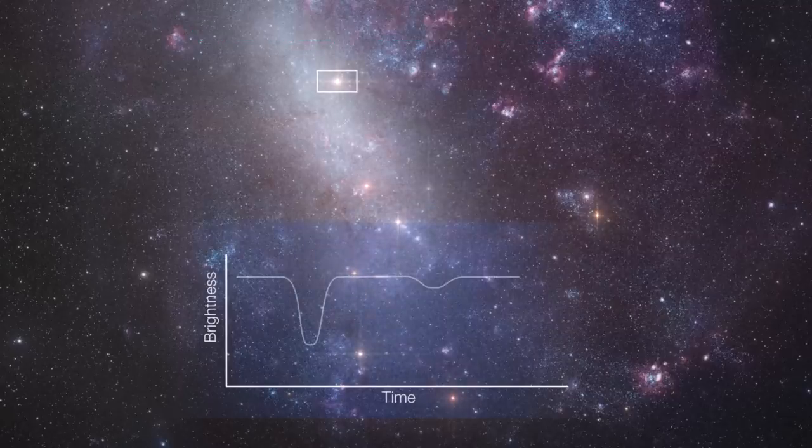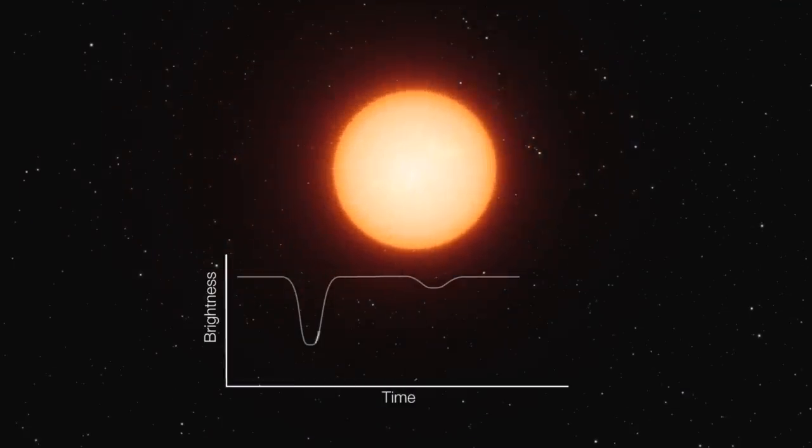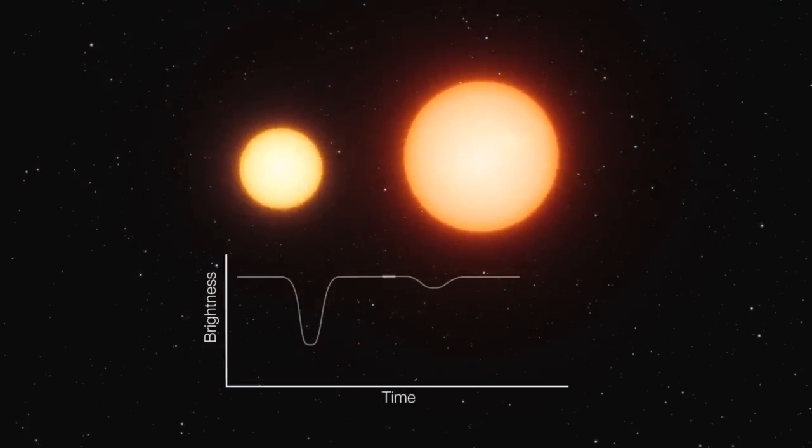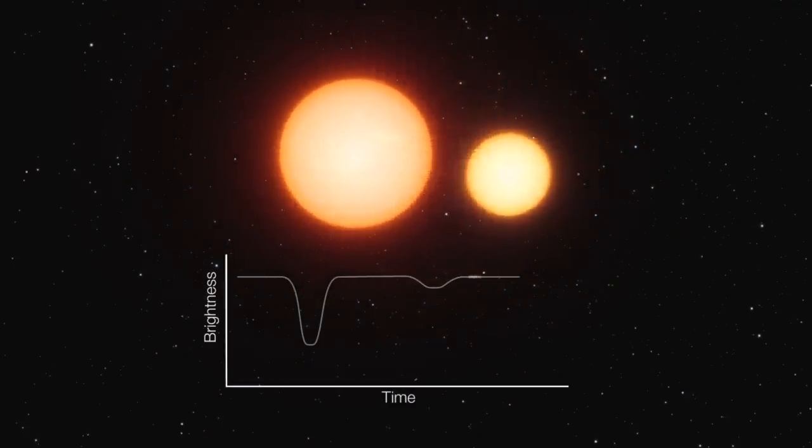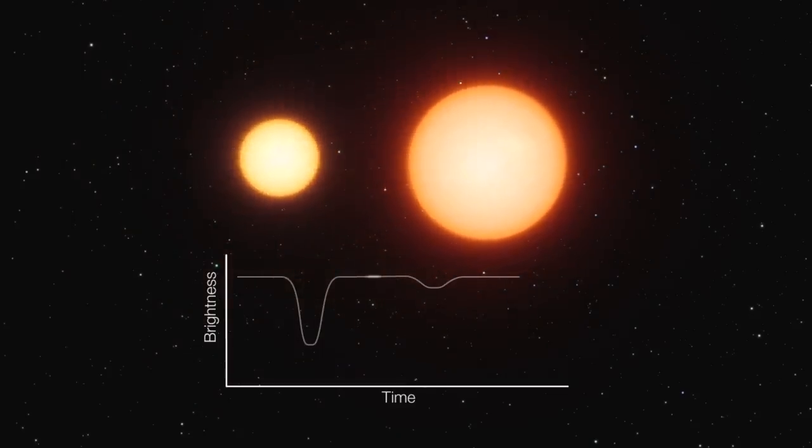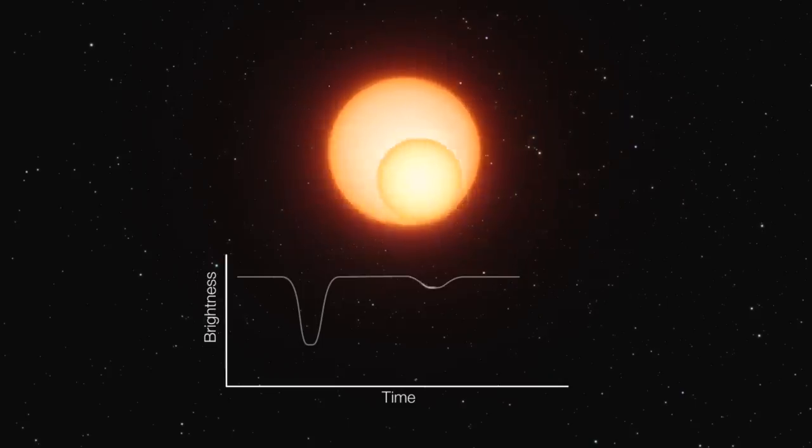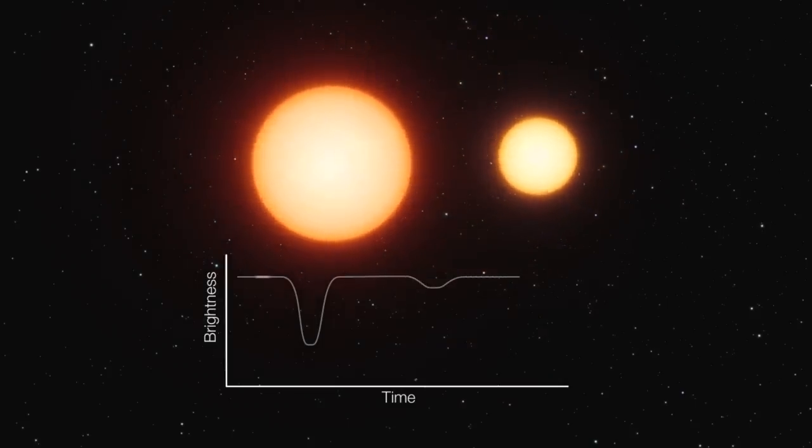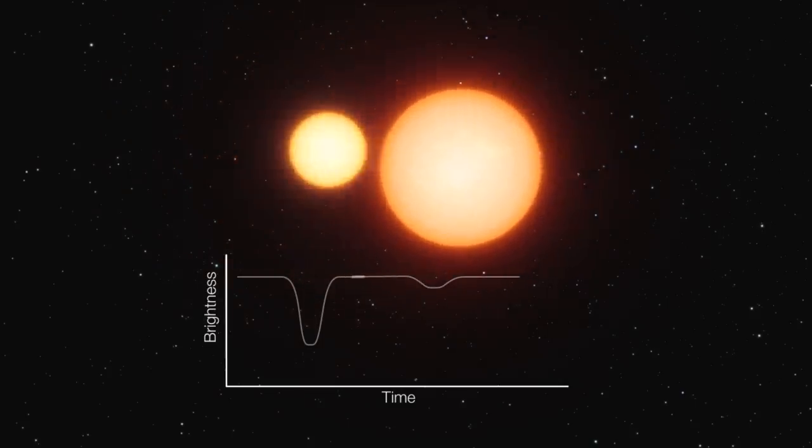This situation allows us to gather important information about the system and is actually one of the best ways to detect them in the first place, as we can chart the reliably periodic change in luminosity first as the larger star passes in front of the smaller, and then as the smaller star passes in front of the larger, in cyclical fashion.